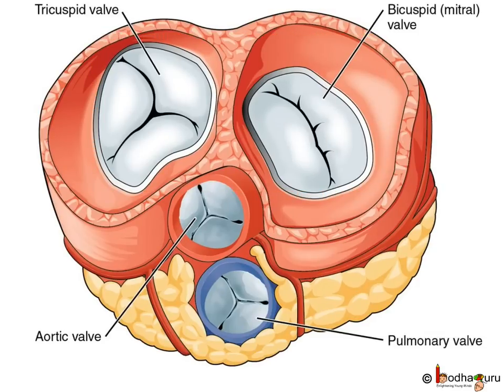The second heart sound, i.e., dub, is caused by the closure of the aortic and pulmonary valves, which prevent the reverse flow of blood from the aorta and pulmonary artery back to the ventricles. When blood from the aorta and pulmonary artery tries to come back to the ventricles, these two valves close and this causes the sound dub. The second heart sound is denoted by S2, and it marks the end of the systole of the ventricles.